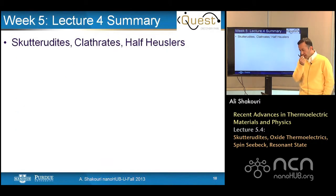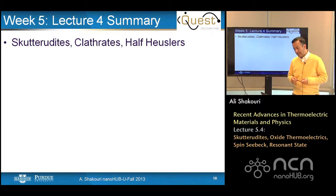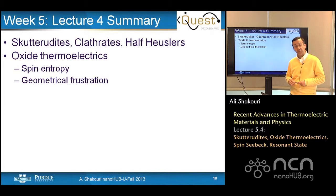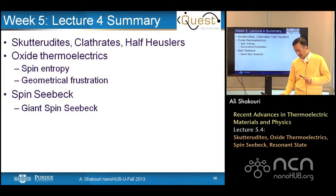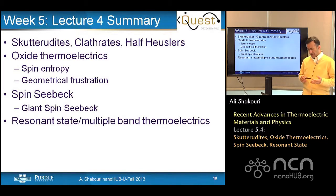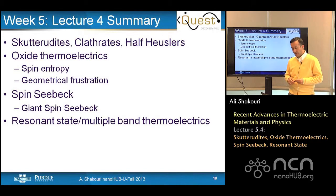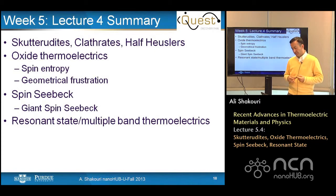Here is a summary of lecture four. We discussed skutterudites, clathrates, and half-Heusler alloys — materials subject to thermoelectric research over the last 10 to 20 years. Oxide thermoelectrics show very interesting physics due to spin entropy and geometrical frustration. There is a new spin Seebeck and giant spin Seebeck effect involving different spin transport under a temperature difference. Finally, we discussed resonant state and multiple band thermoelectrics. In lecture five, we return to thermoelectric fundamentals; lecture six reviews this week's content.